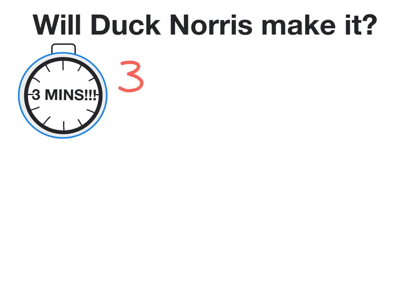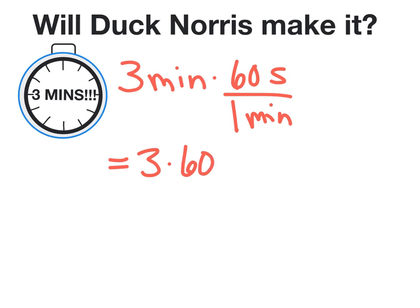We know the timer said that he had three minutes to make it to class in time. We need to figure out how many seconds that is. We do that by multiplying by the conversion ratio of 60 seconds equals 1 minute. We can simplify this to say 3 times 60 seconds as our minutes will cancel, and what we're going to be left with is 180 total seconds to get to class.